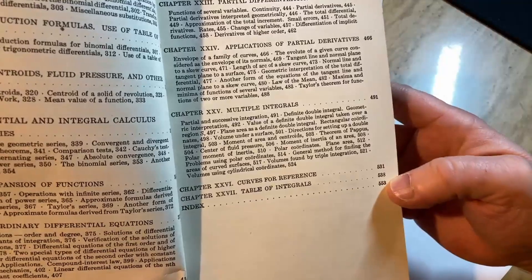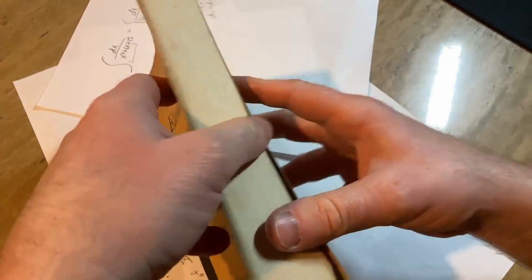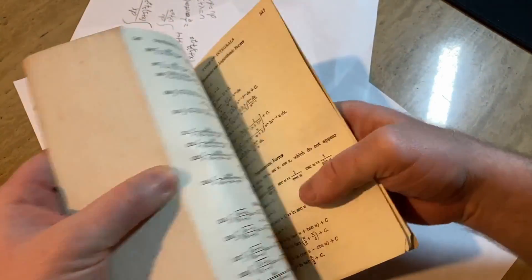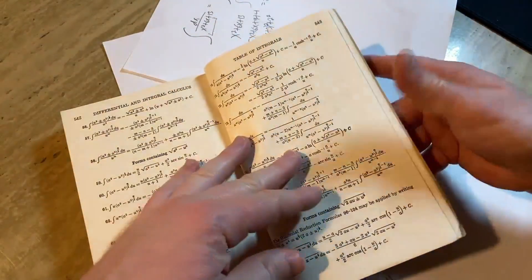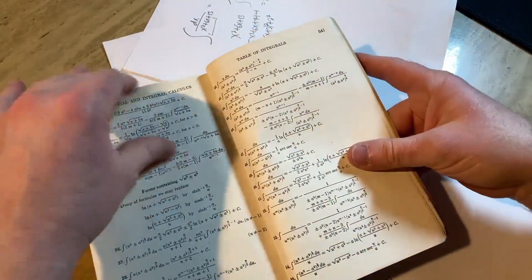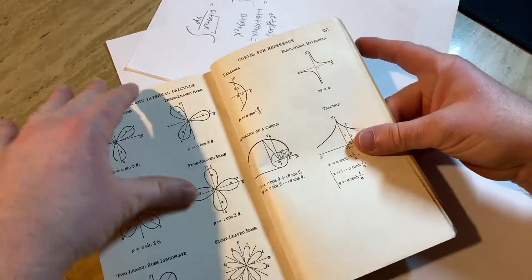Then you've got a bunch of tables in the back of the book and some curves. Let me show you that. It's really interesting that they have that. So tons of integration tables in the back of the book. Just tons and tons and tons. Did not mess around. The army has to have the tables.